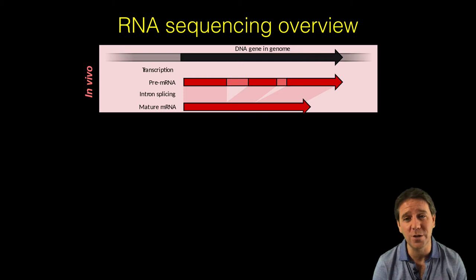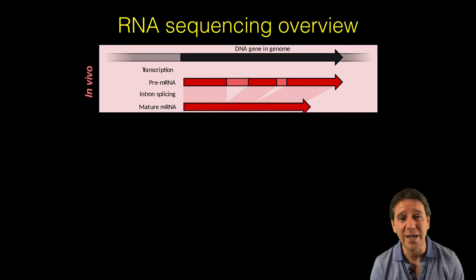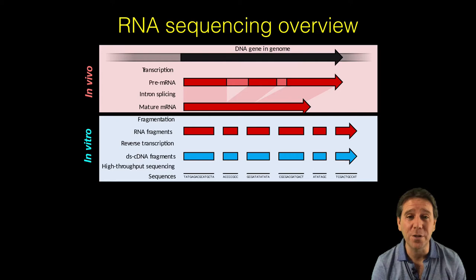In vivo here behind me, we go from DNA in the genome through transcription to pre-mRNA and trans-splicing to mature mRNA. Then in vitro, in blue here, we have the lab prep stage that entails extraction, RNA fragmentation, reverse transcription to cDNA, then DNA sequencing.